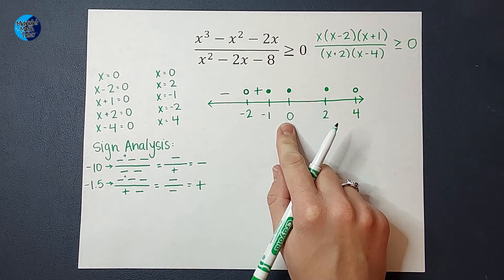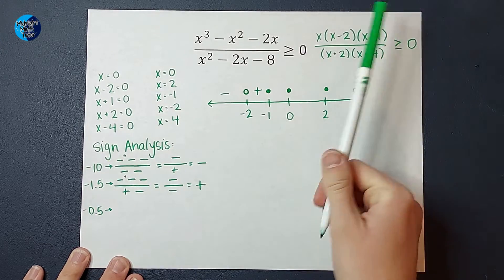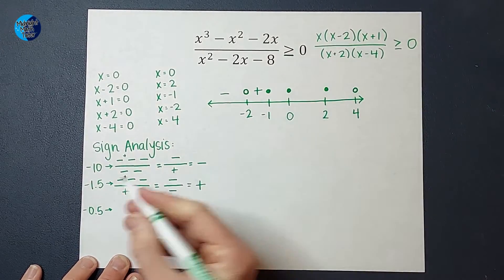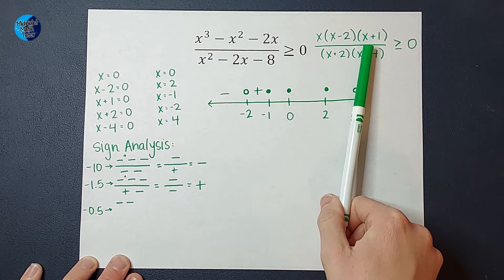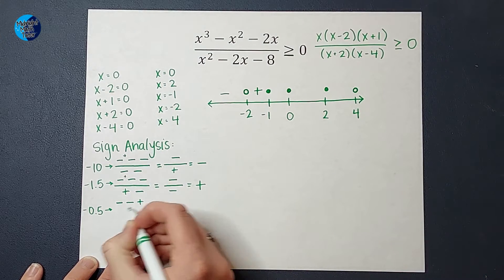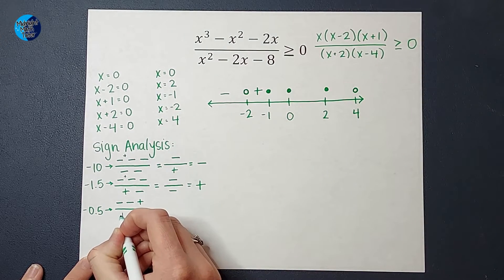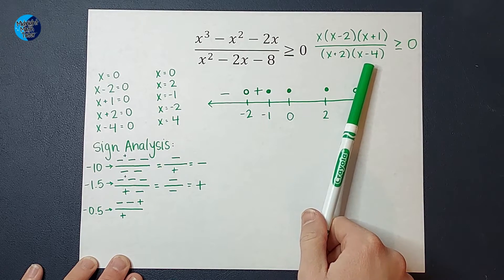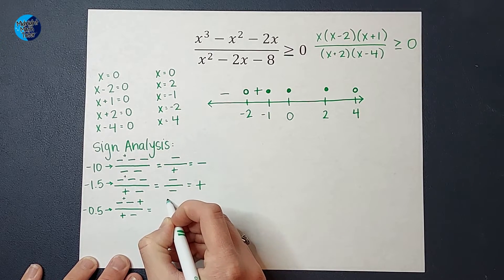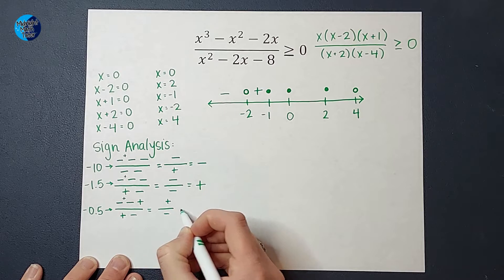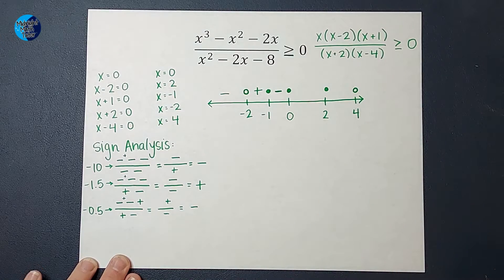Between negative 1 and 0, let's pick negative 0.5. When I plug that in, I get a negative. Negative 0.5 minus 2 is also negative. Negative 0.5 plus 1 would be positive. Negative 0.5 plus 2 is positive. Negative 0.5 minus 4 is negative. Negative times negative is positive, times positive is positive. Over positive times negative is negative. Positive divided by negative is negative — that region is negative.